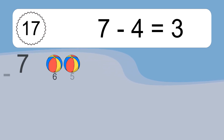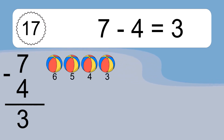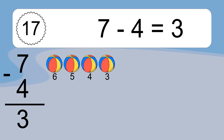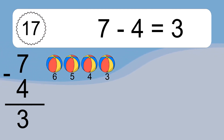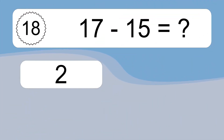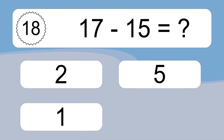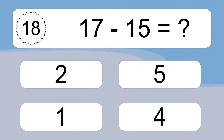7 minus 4 equals what? 7 minus 4 equals 3. Let's count it. 6, 5, 4, 3.